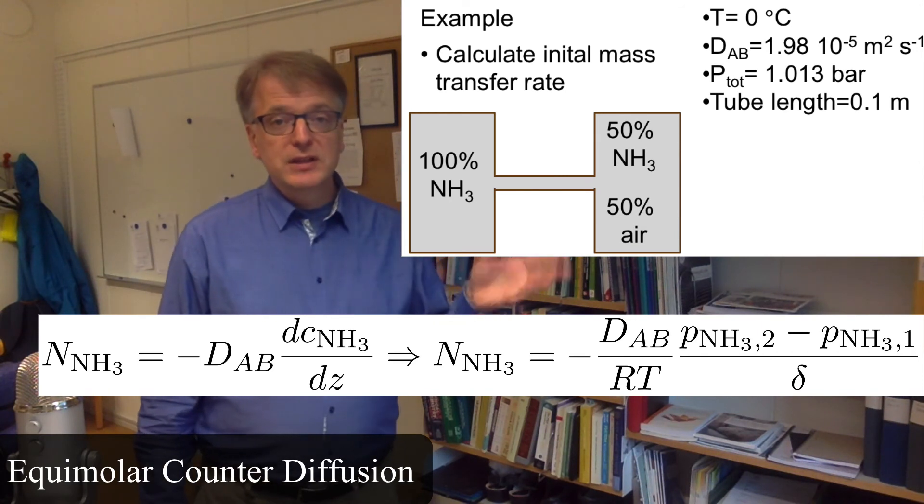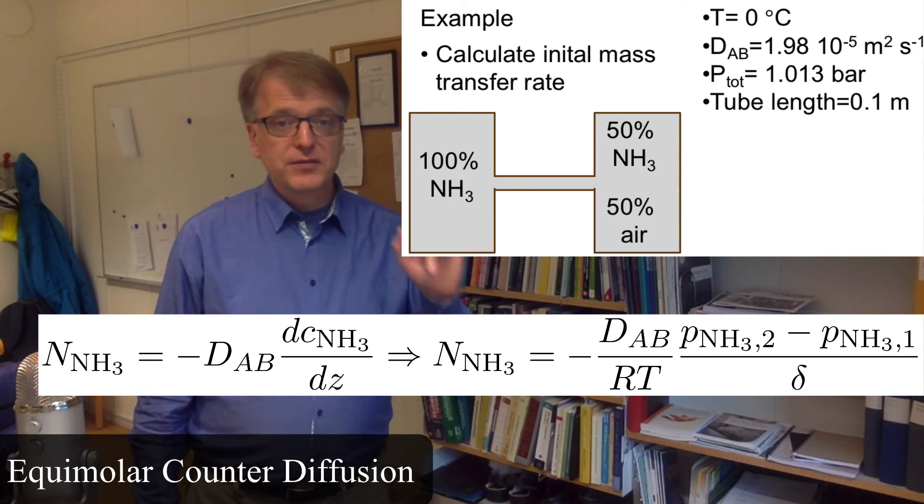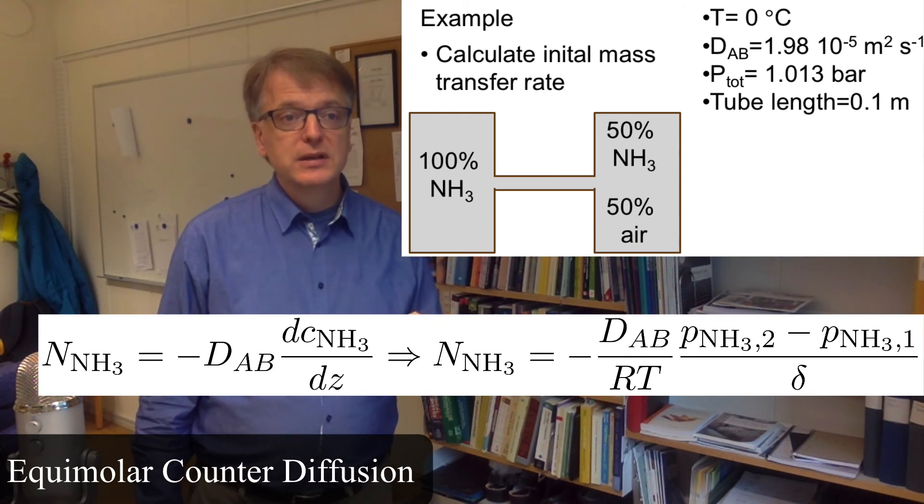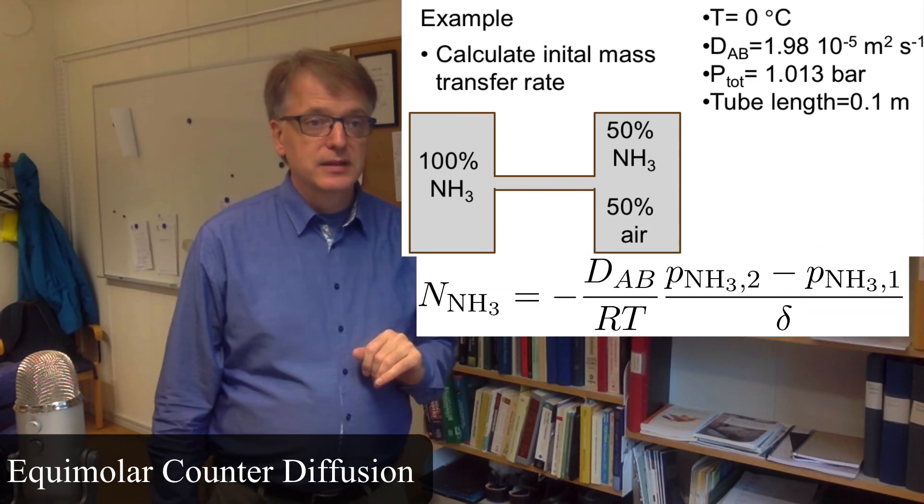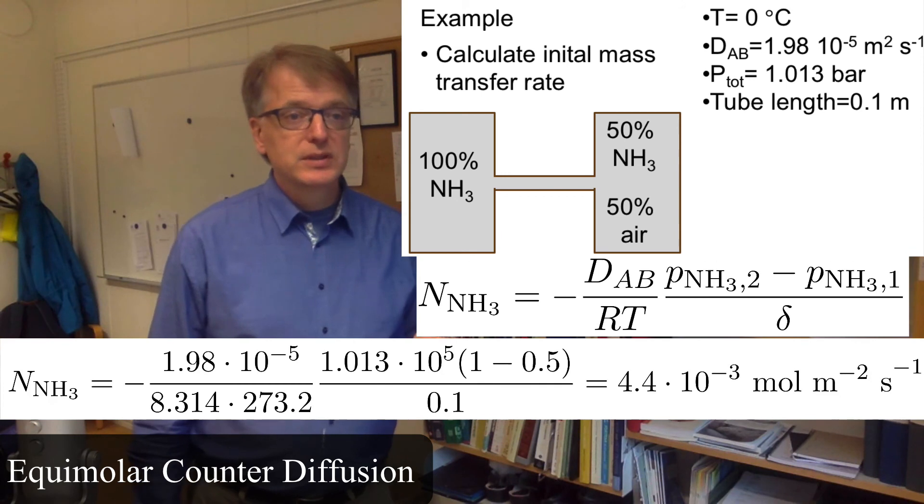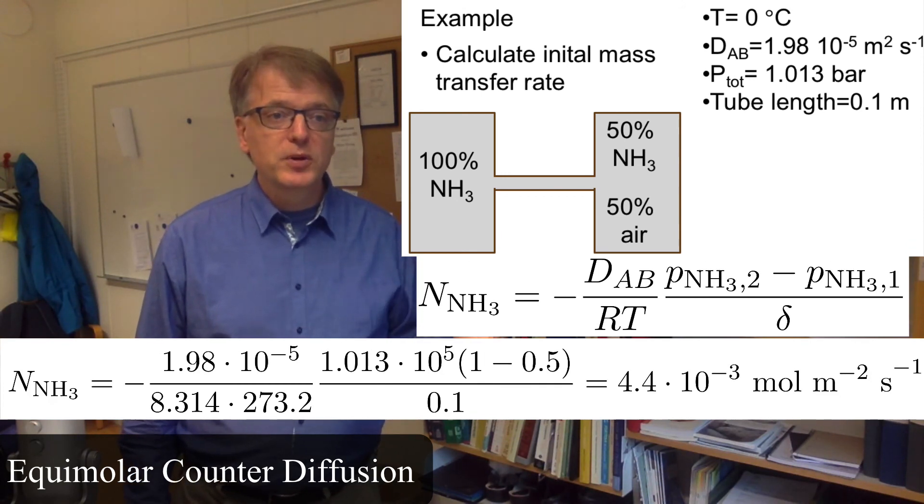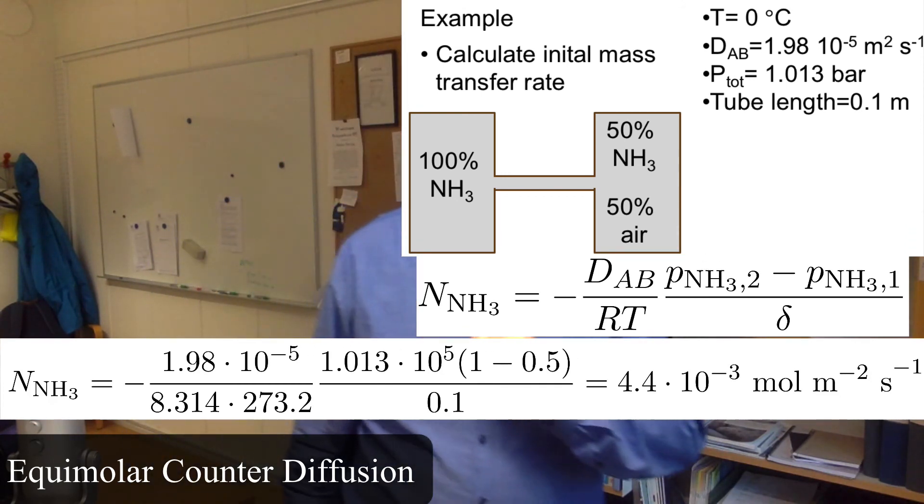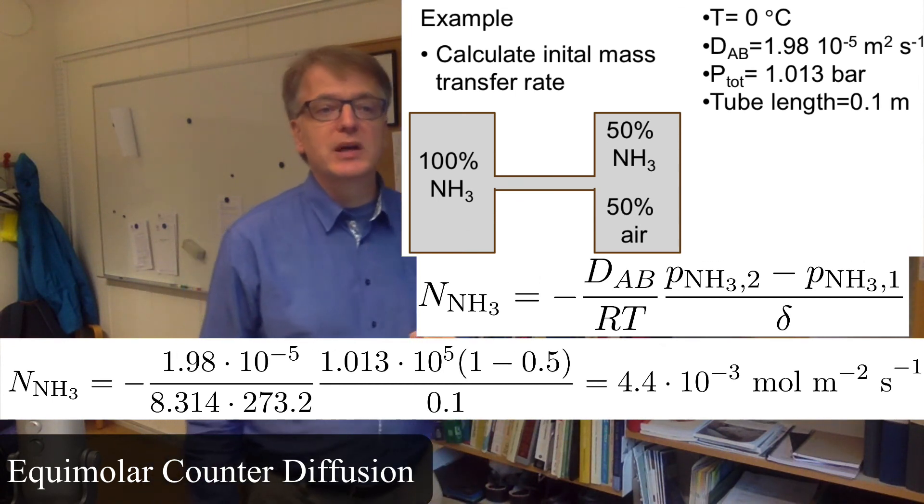So the partial pressure of ammonia divided by RT is the concentration of ammonia. We take the diffusivity divided by RT and the difference in partial pressure, and divide that by the distance.